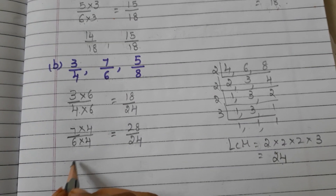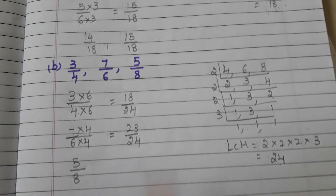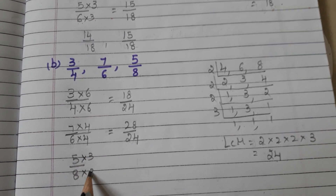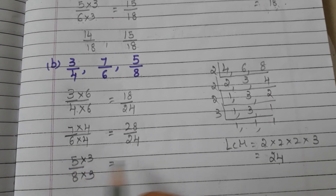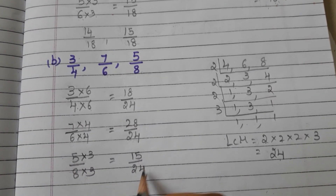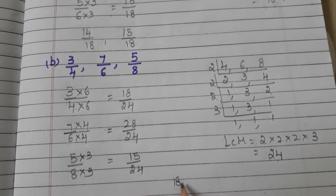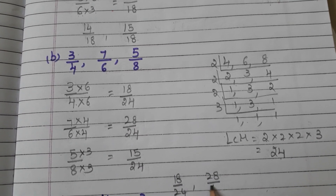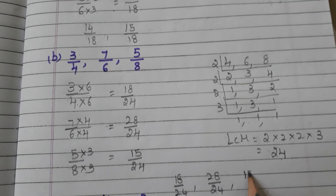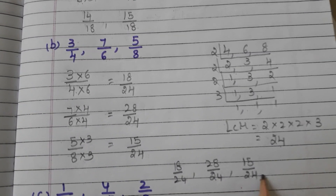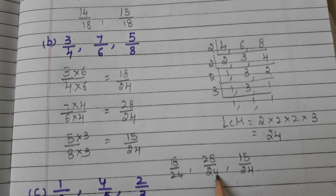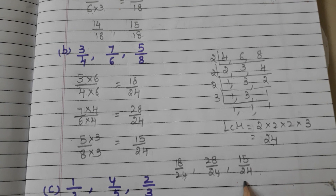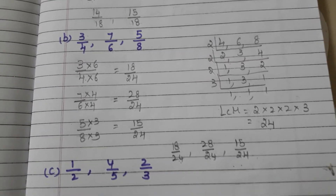Now take the fraction 5 by 8. 8 threes are 24, so we multiply the numerator and denominator with 3: 5 threes are 15 and 8 threes are 24. Now we have 18 by 24, 28 by 24, and 15 by 24. Observe the denominators — they are the same. So 18 by 24, 28 by 24, and 15 by 24 are now like fractions.